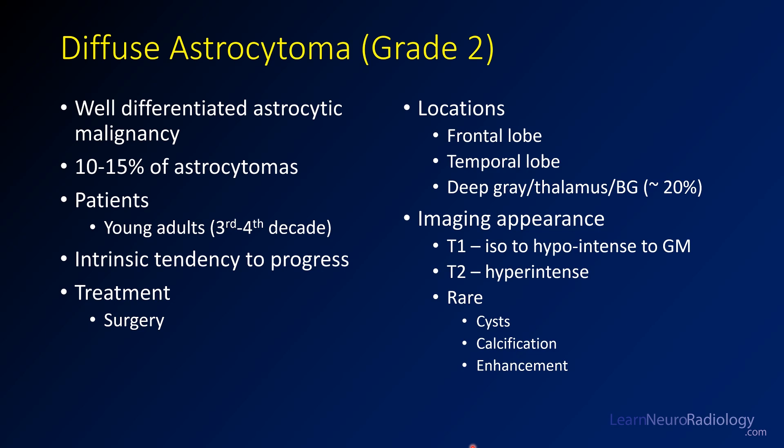On imaging, you're going to see exactly what we saw in this case: an iso- to slightly hyperintense lesion to gray matter, and a slightly hyperintense lesion on T2. You can sometimes have little cysts, calcifications, or enhancement, but those are relatively rare for these grade 2 tumors.